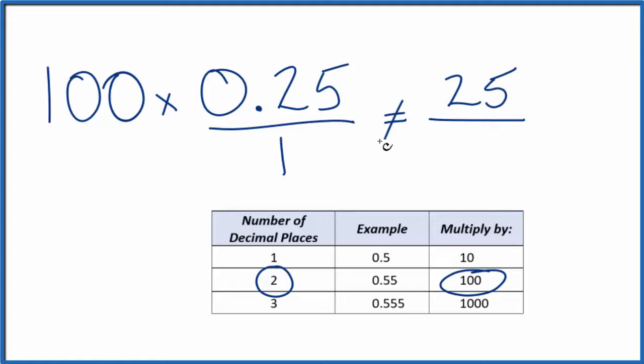But 25, that's not equal to 0.25. So what we need to do is multiply the bottom by 100 as well. So now 100 over 100, that's the same as 1. So we're not changing the value here, just the way it's represented.